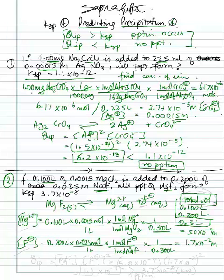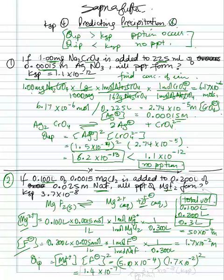Now we have both ion concentrations, so we calculate QIP. QIP equals the magnesium ions times the fluoride ions squared (since there are 2 fluoride ions): (5.0 × 10⁻⁴) × (1.7 × 10⁻²)². This equals 1.4 times 10 to the negative 7. That's our QIP. Comparing to KSP, which is 3.7 times 10 to the negative 8 — QIP is more than KSP, so yes, precipitation occurs.